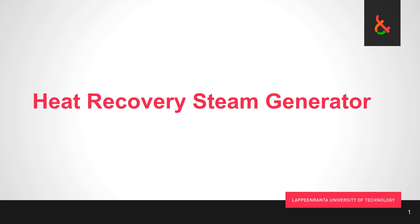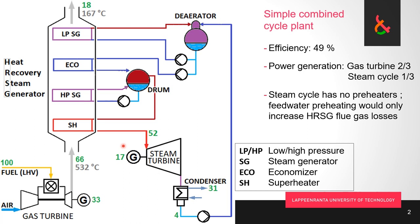In this video we are taking a look at a heat recovery steam generator in a combined cycle power plant, combining a gas turbine topping cycle and a steam turbine bottoming cycle. This is the simplest possible form of a heat recovery steam generator. We have a simple cycle open gas turbine, putting in 100 units of energy in the combustion chamber. We are able to produce 33 units of power from the generator, and the remaining 66 units go to the heat recovery steam generator, which acts as our boiler.